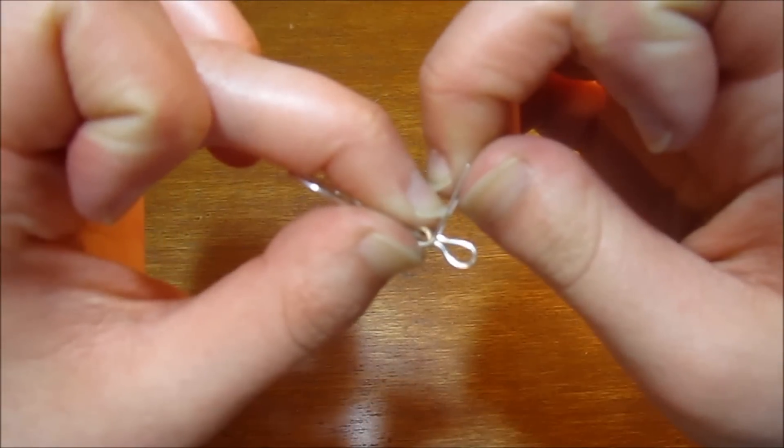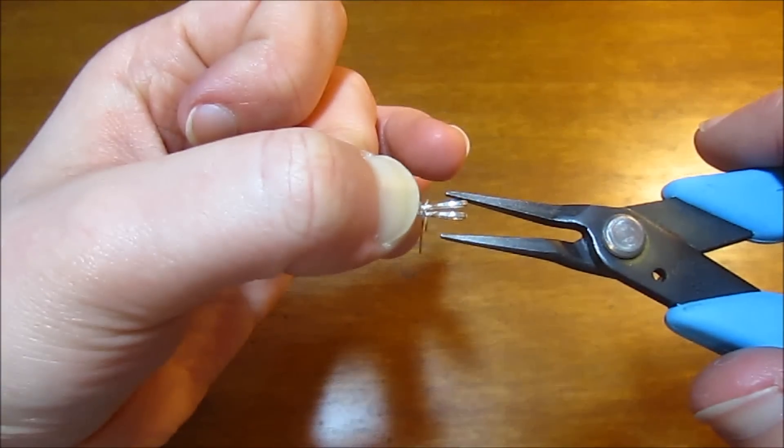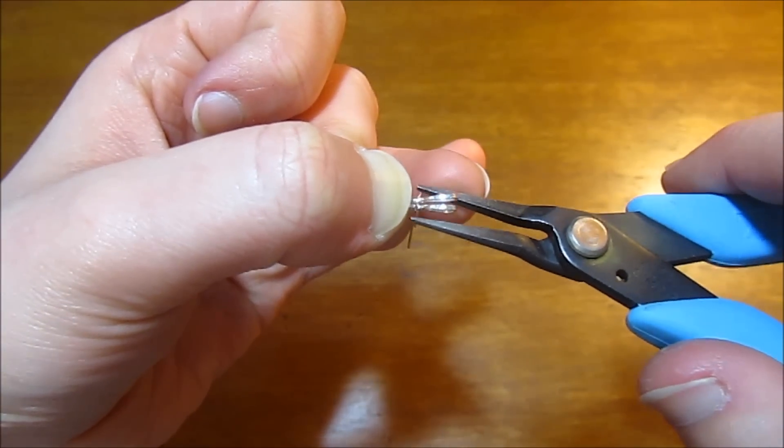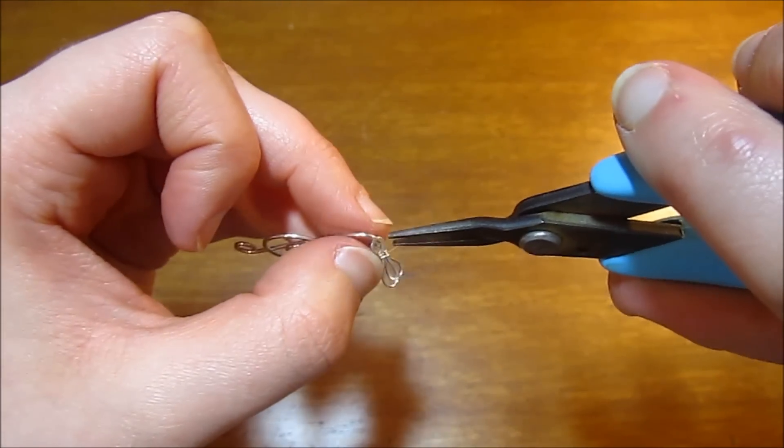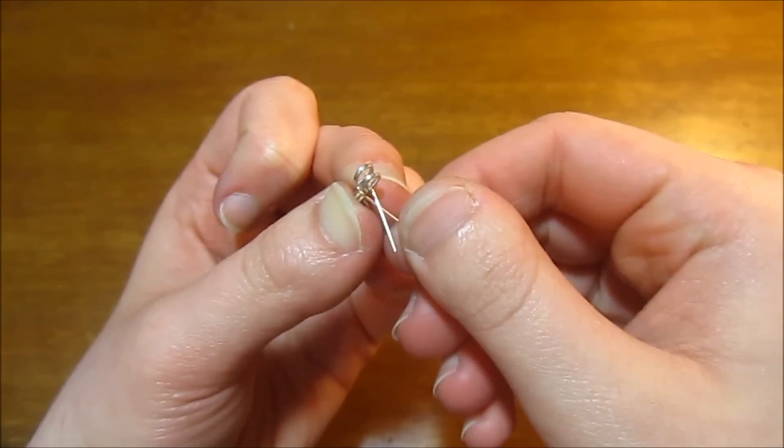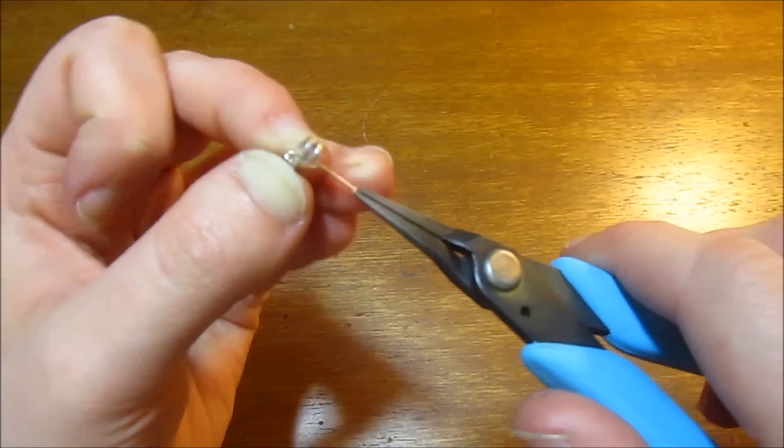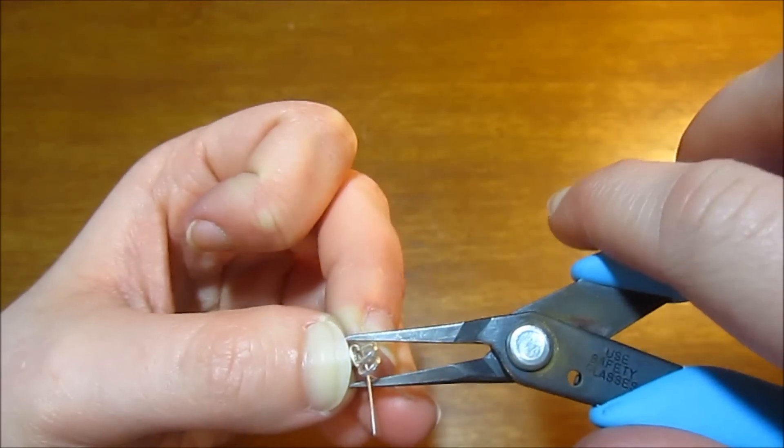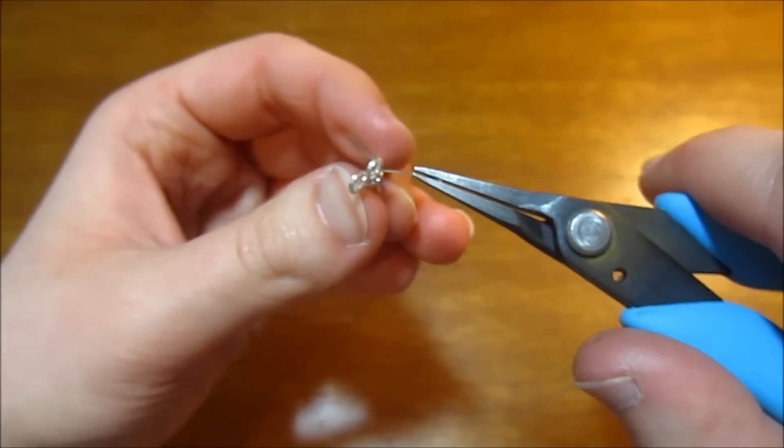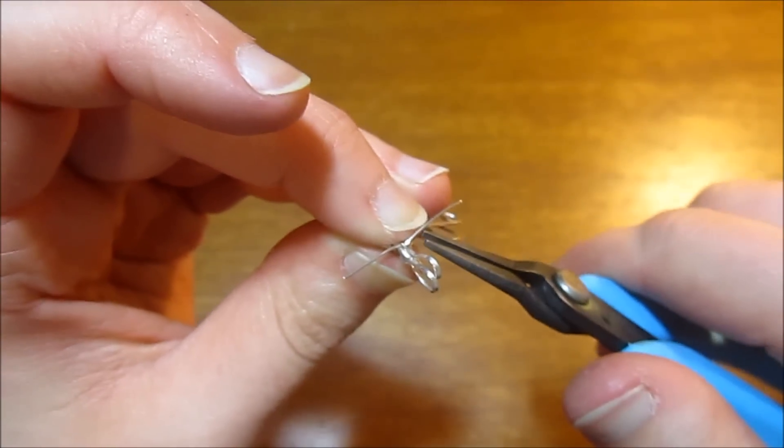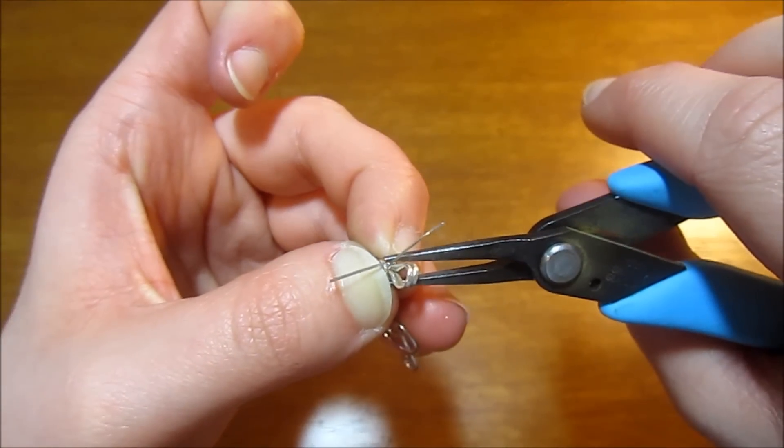You're just going to drop this onto that straight portion. Then holding this with your thumb, you're going to take your chain nose pliers and squeeze those shut so that the ends cross over each other just like that. You're going to keep closing that up until it's lying flat against your two bails. At this point I'm just maneuvering those two tails to continue crossing over each other.